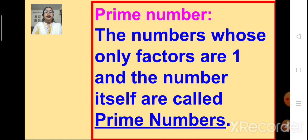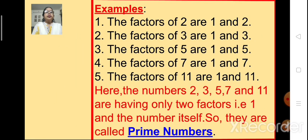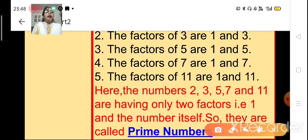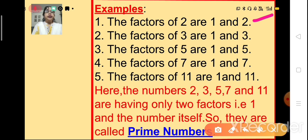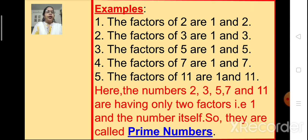Now let's look at the definition of prime numbers. The numbers whose only factors are 1 and the number itself are called prime numbers. The factors of 2 are 1 and 2. The factors of 3 are 1 and 3. The factors of 5 are 1 and 5. The factors of 7 are 1 and 7. Similarly, the factors of 11 are 1 and 11. So the factors of these numbers are 1 and the number itself, and these numbers are known as prime numbers. The numbers 2, 3, 5, 7 and 11 have only two factors — 1 and the number itself — so they are called prime numbers.